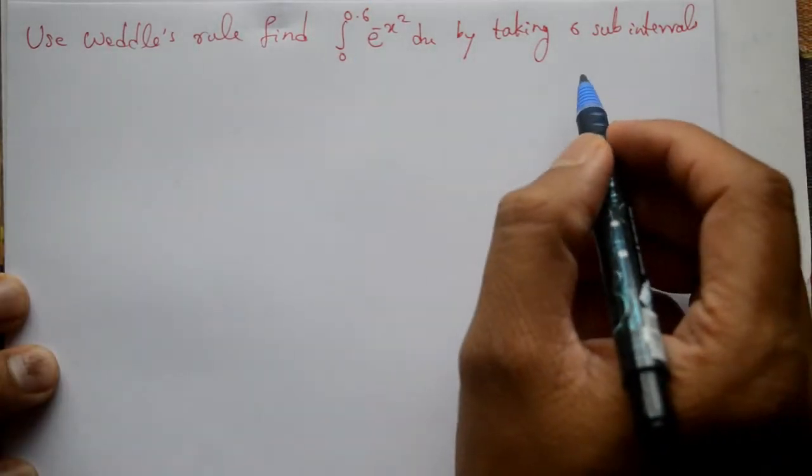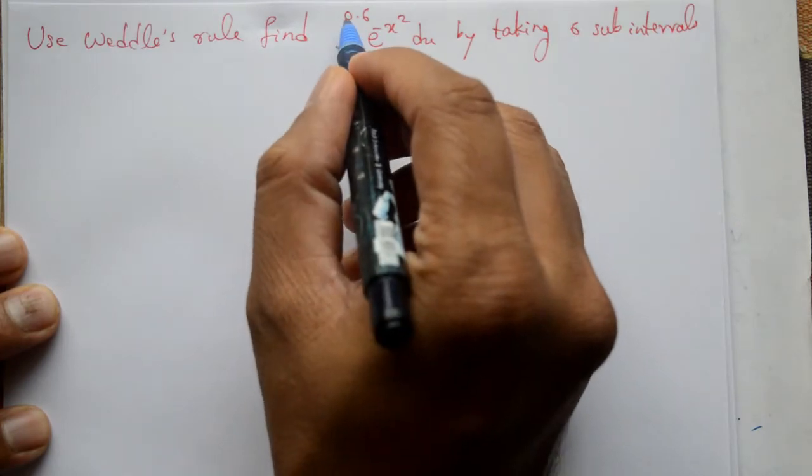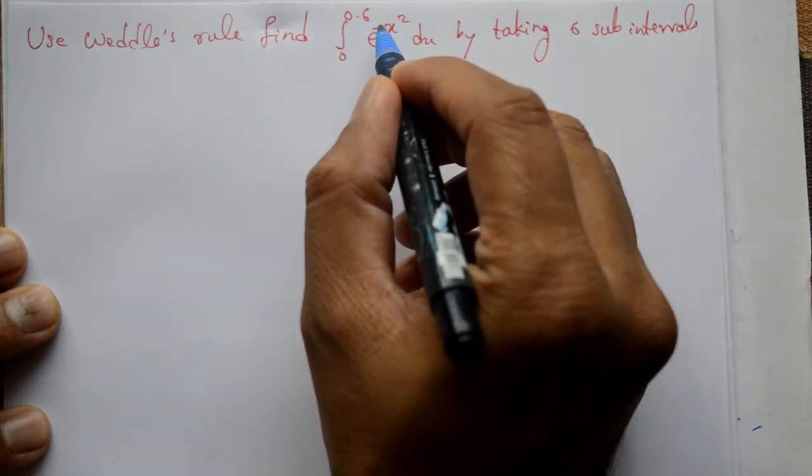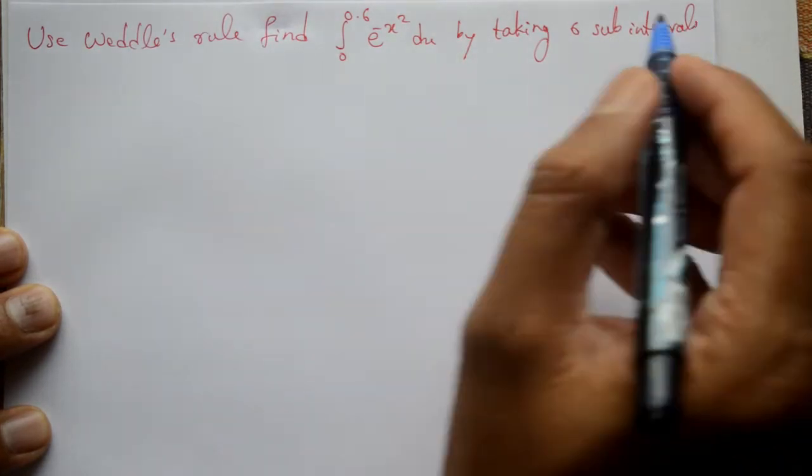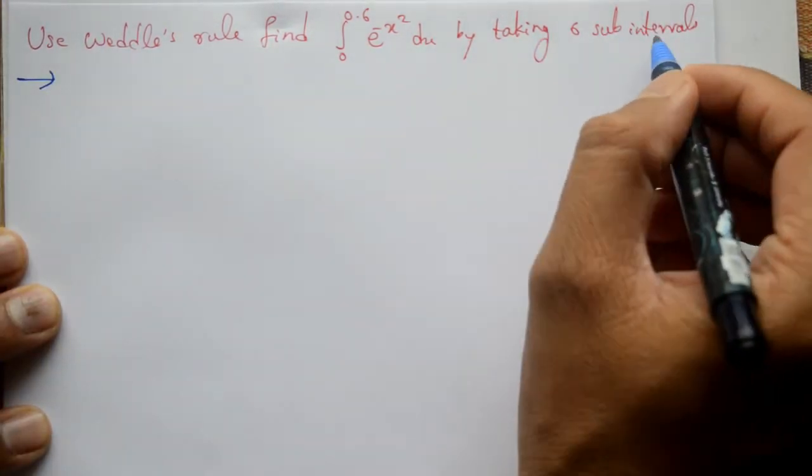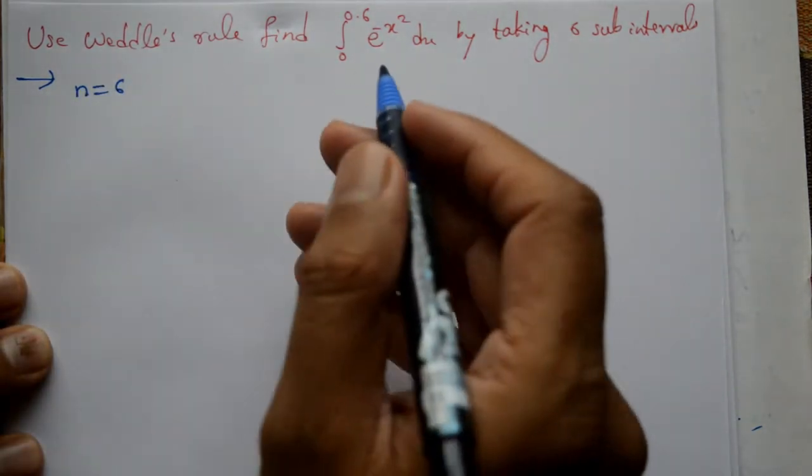Welcome students, we will solve this problem. Use Weddle's rule to find integration of 0 to 0.6, e to the power minus x square with respect to x, by taking 6 sub-intervals. Six sub-intervals means n is equal to 6.